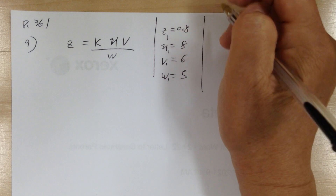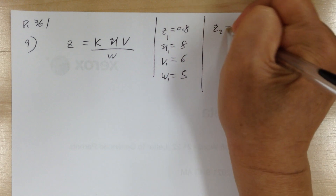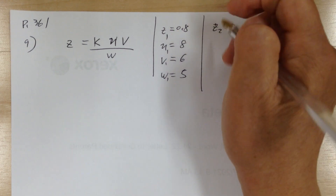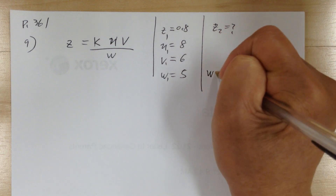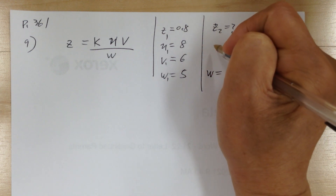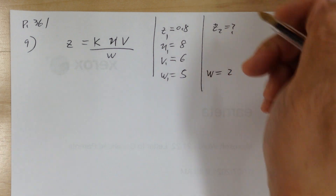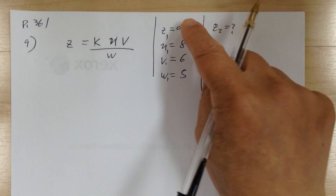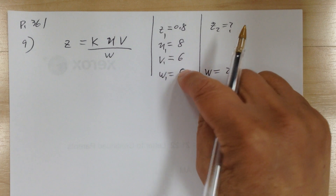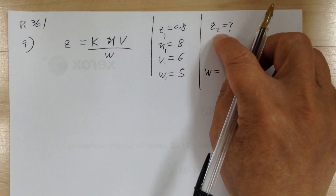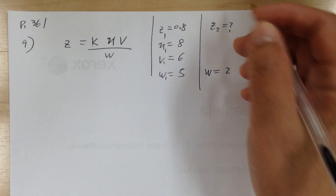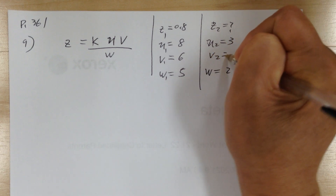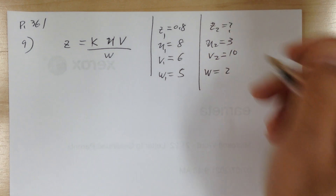Find z when u equals 3, v equals 10, and w equals 10. Substitute everything to look for k: 0.8 equals k times 8 times 6 over 5.